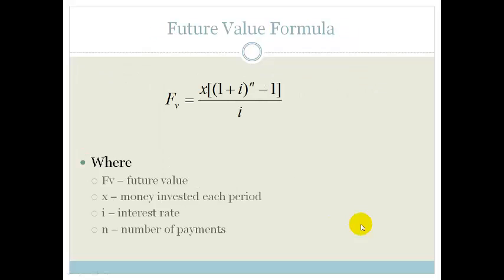The future value formula is F_v = X[(1 + i)^n - 1]/i, where F_v is your future value, X is the money invested every period, whether it be quarterly, monthly, annually, whatever. I is your interest rate and N is your number of payments. Now, don't freak out. This formula is on the formula sheet. All you need to know is how to use it. So, let's do a couple of examples.